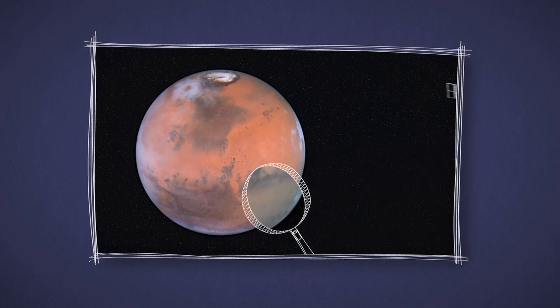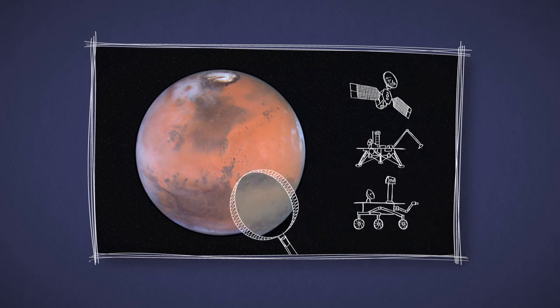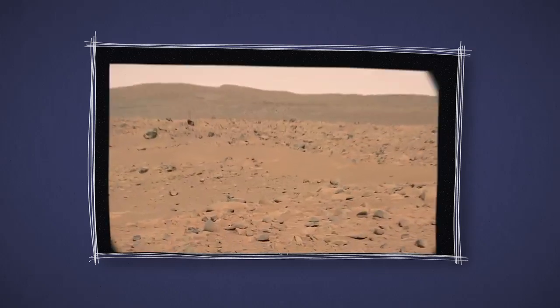But if you get a close-up view with an orbiter, lander, or rover, you'll see that a lot of Mars is actually more of a butterscotch color.